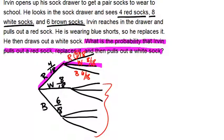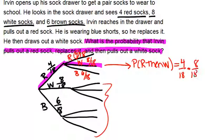So now we're worried about red and then white. So all we need to do at this point is multiply those two probabilities. So the probability of red then white equals four out of 18 times eight out of 18, which equals 32 out of 324 or eight out of 81.